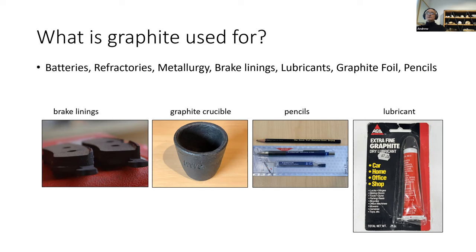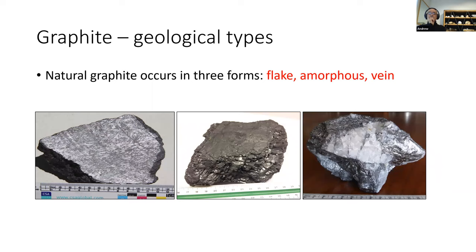The three types illustrated: on the left is flake graphite — you can see the silvery flakes on that piece of rock, which is from an underground mine in Europe. The middle illustration is metamorphosed coal, known as amorphous graphite. And the one on the right is some vein graphite with quartz from Sri Lanka.